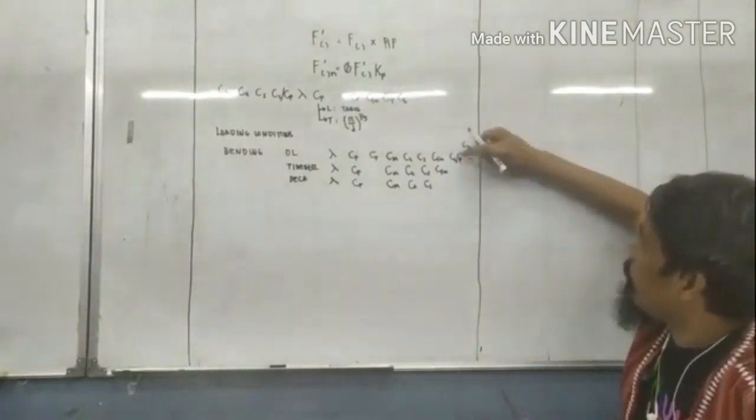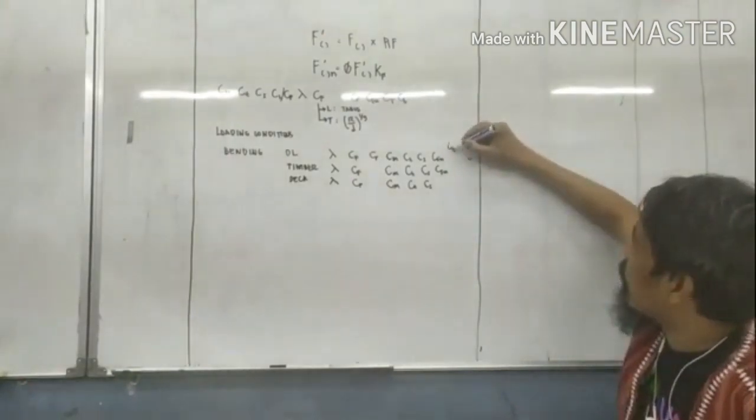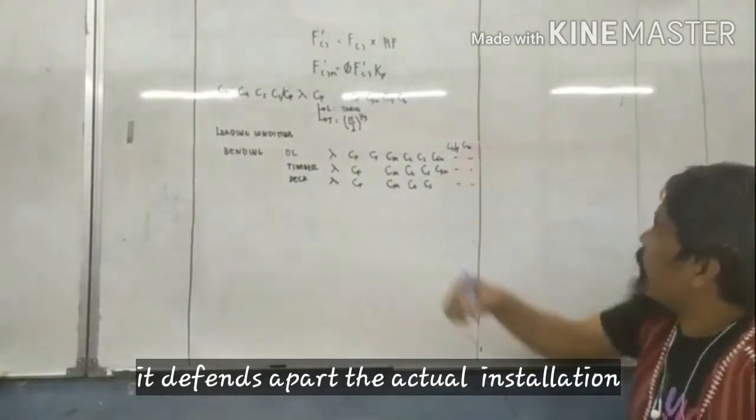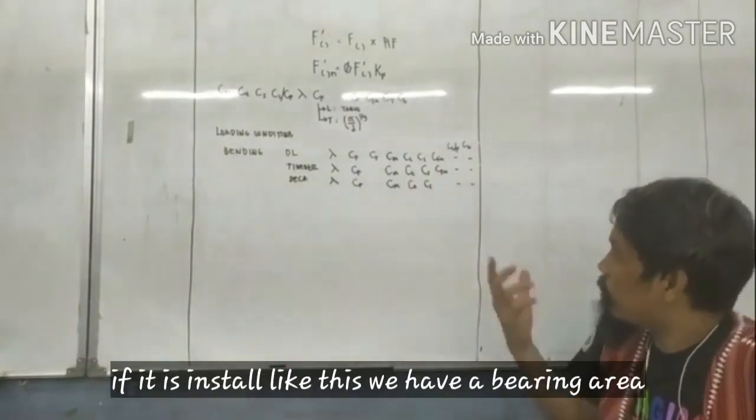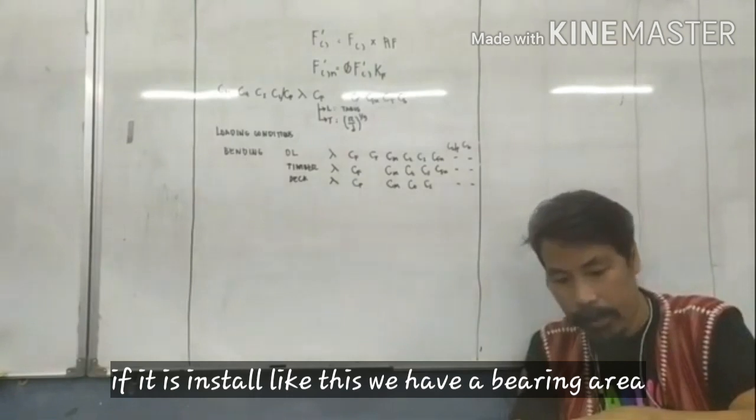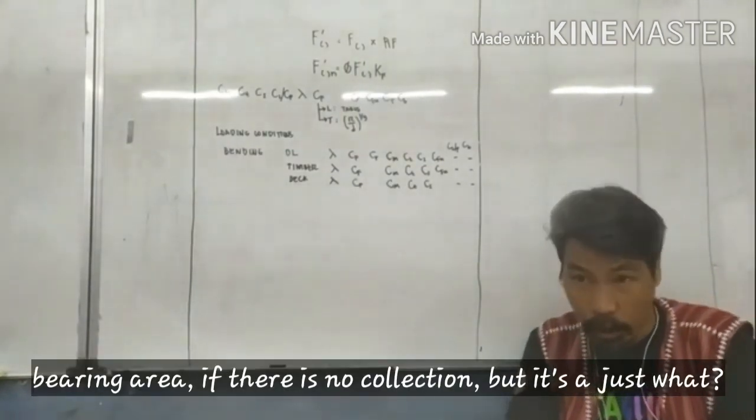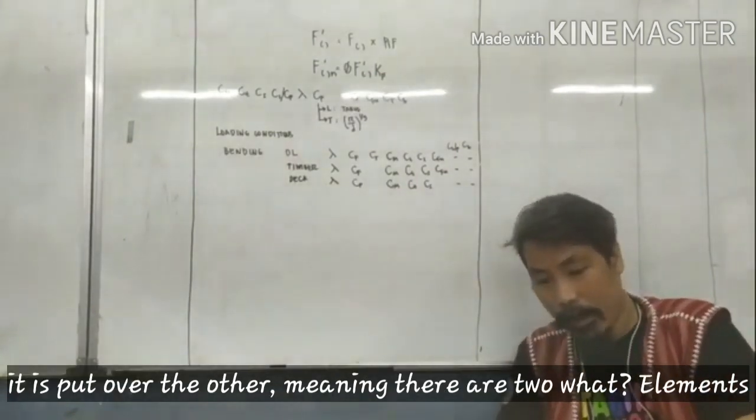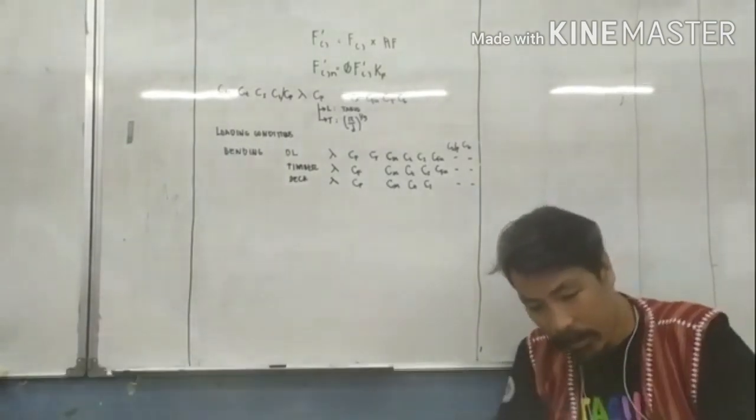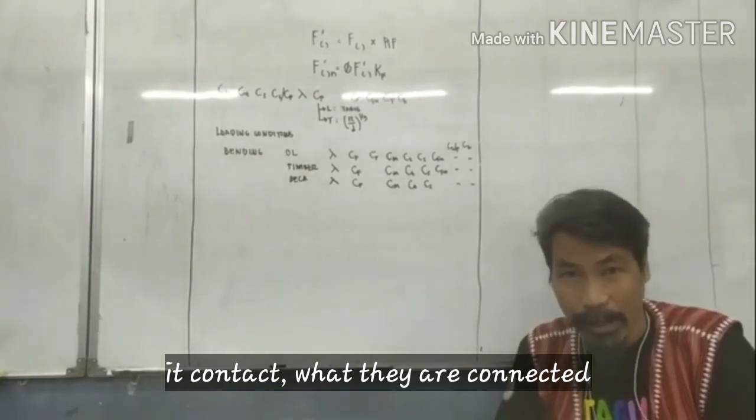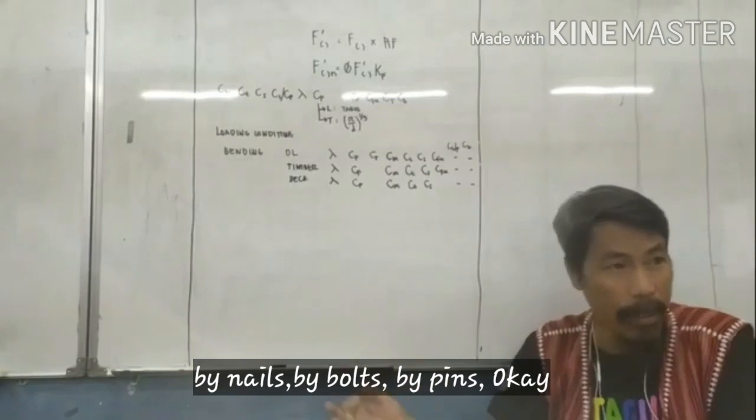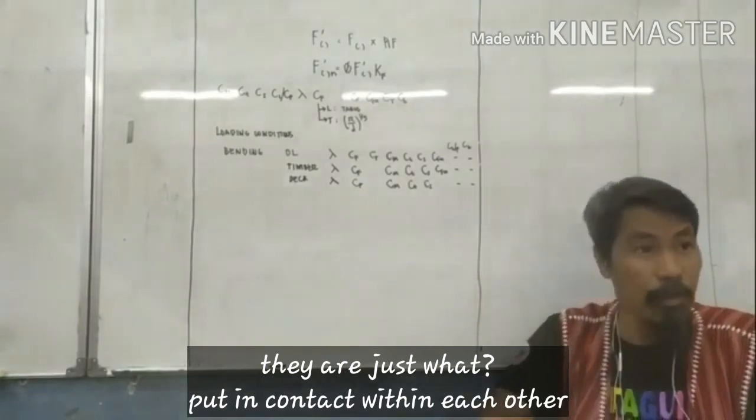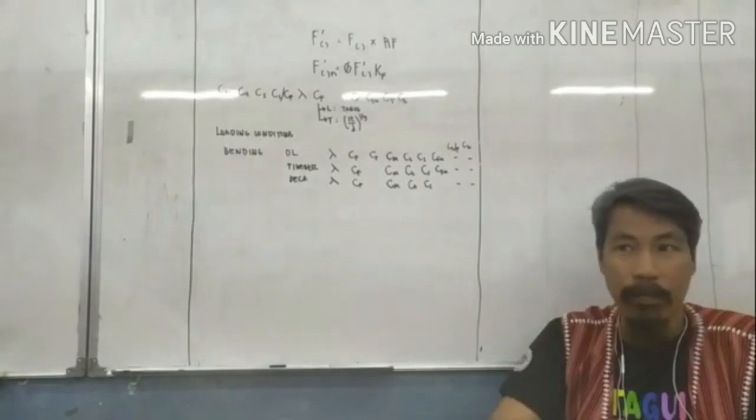CV. Even if it depends upon the actual installation. If it is installed like this, we have the bearing area. Bearing area. If there is no connection, but it is just one, it is put over the other. Meaning there are two - one and two - there are two elements in contact.